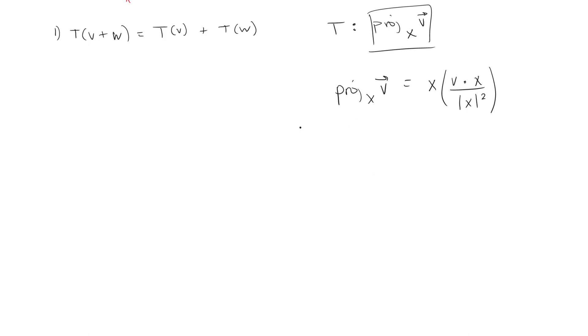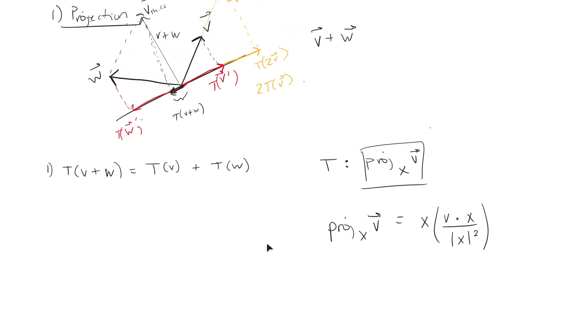You give me a vector V or any vector W, and this will create a projection vector onto the plane span by X.